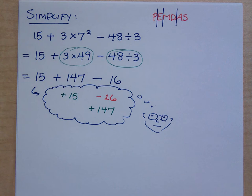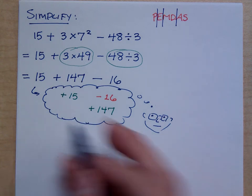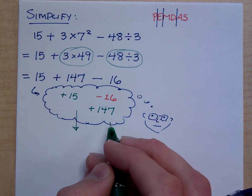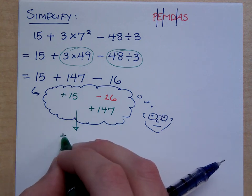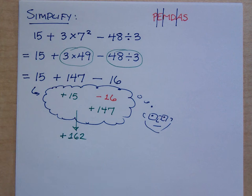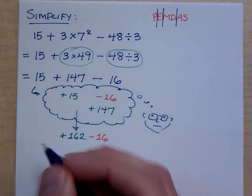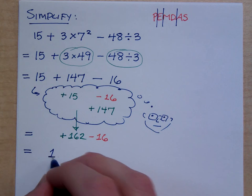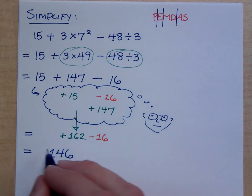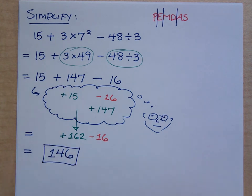So that's one way of doing it. Even without writing anything, it's positive 146. If I combine the positive stuff first — positive 15 and positive 147 is positive 162 — and then I have minus 16. That's just 162 minus 16, so you still get positive 146, just like we said the first time. What do you guys think? Watch your signs. This one was fairly straightforward.